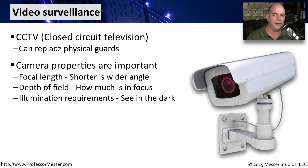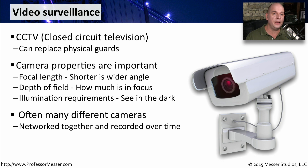Not all cameras are the same, and you need to find a camera that fits what you're trying to accomplish. You need to look at the focal length — a shorter focal length gives you a wider angle so you can see more. The depth of field is also important, as it determines how far into the distance everything is in focus. You might also need infrared capabilities so that you can effectively see in the dark, even with no visible illumination. Most organizations have many different kinds of cameras networked back to one central point, usually connected to a digital video recorder, a DVR, which records every camera all the time to a very large amount of storage. That way, if there's a question about what happened yesterday or last week, you can rewind to that particular date and time and see what every camera captured.